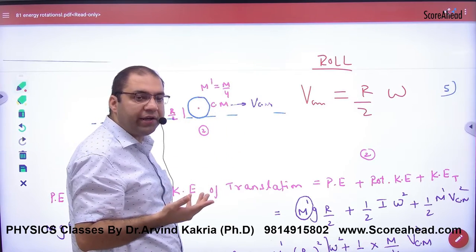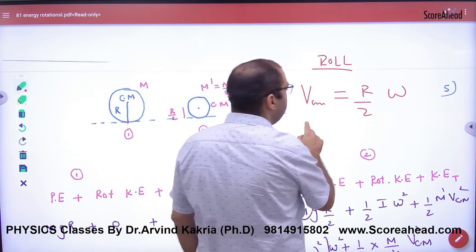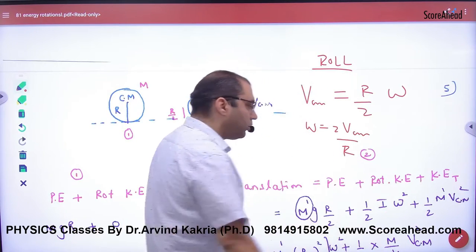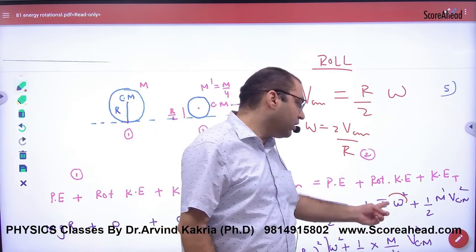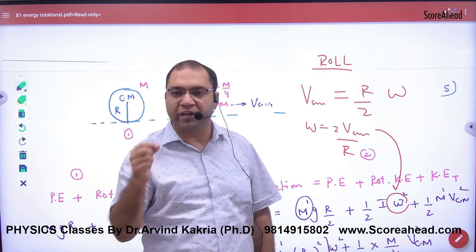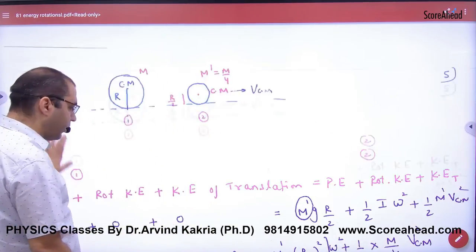But in this instant, radius is not R, the radius is R by 2. So what will I put here? 2 V center of mass by R. So where you see ω, replace it with 2 V center of mass by R.